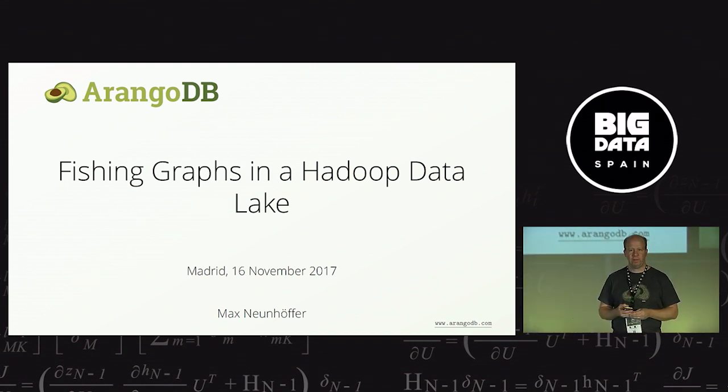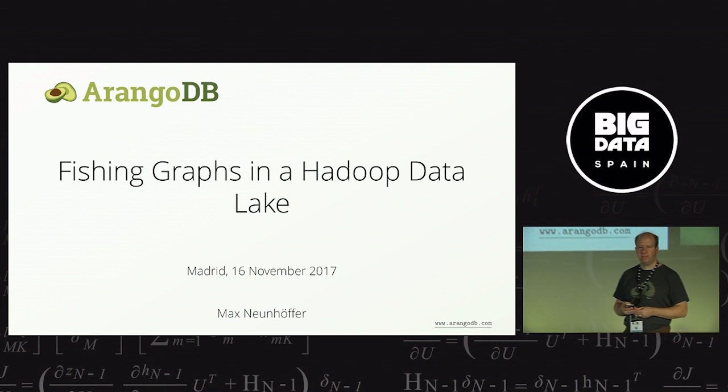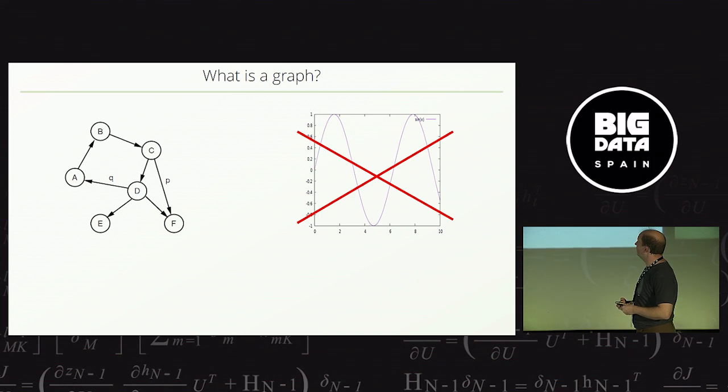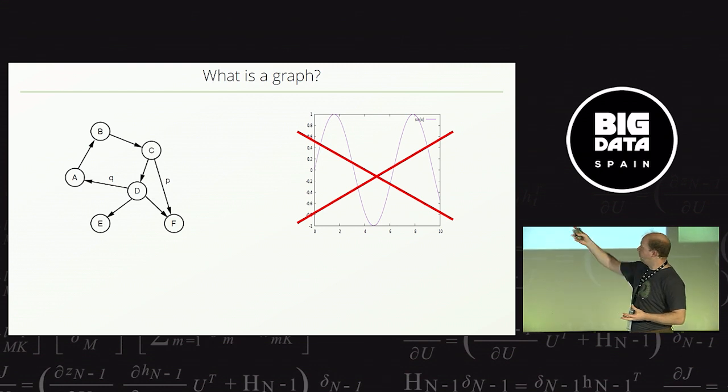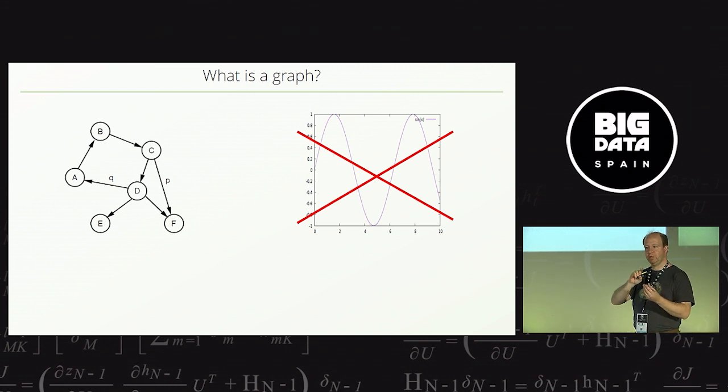So, before I begin talking about Hadoop and Big Data, let me just quickly say what I mean when I say graph. I don't mean the graph on the right-hand side, the plot of a function. I mean the mathematical structure on the left-hand side where you have your vertices denoted by the capital letters and the circles and you have edges, and edges point essentially from one circle or from one vertex to another. As you can see, the vertices can have data associated with them. Here in this example, just letters. And the edges can have data associated as well.